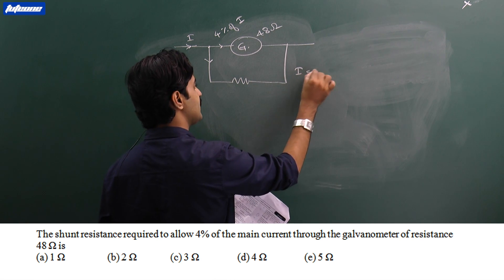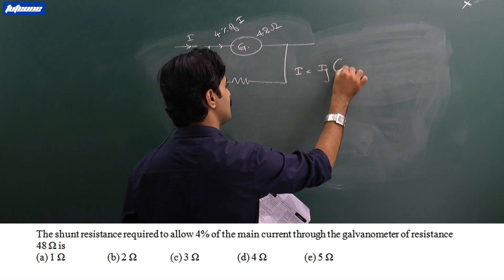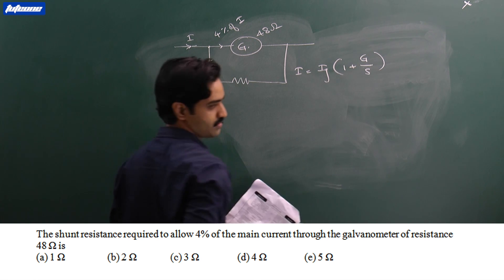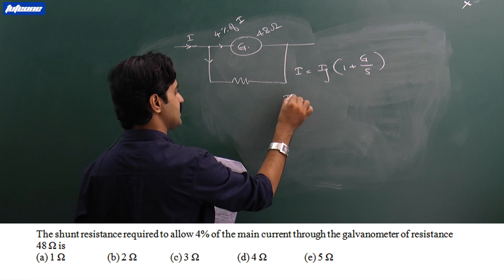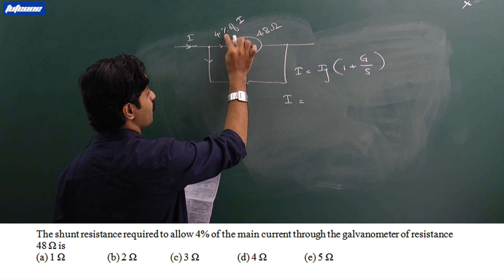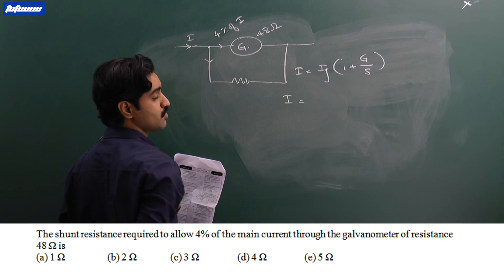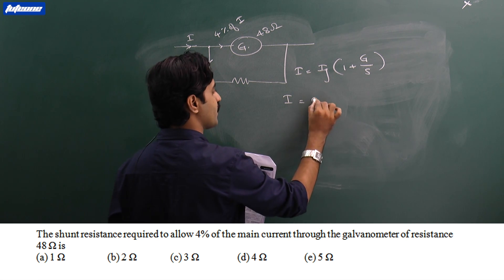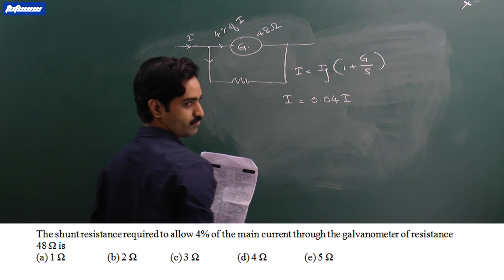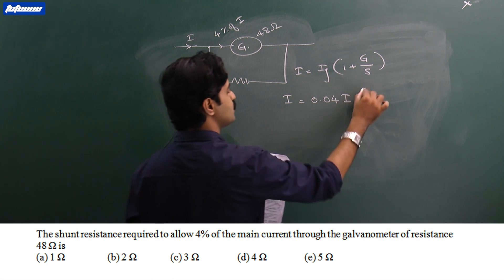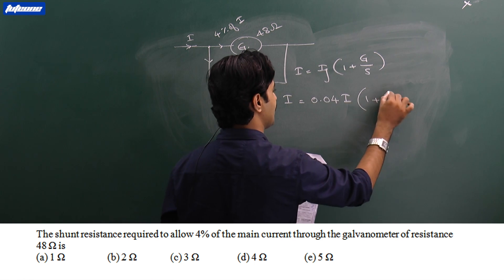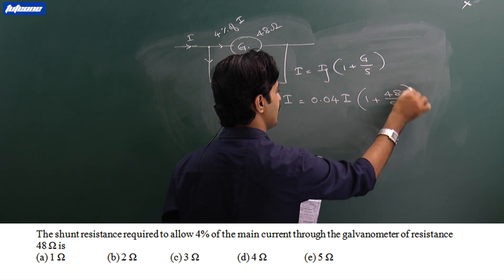Using the equation i = ig × (1 + G/S), substitute for i: ig is four percent of i, that is 0.04i. So: 0.04i = ig × (1 + 48/S).